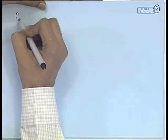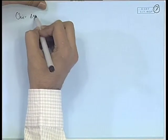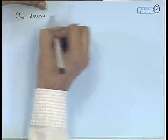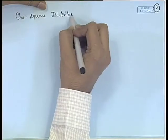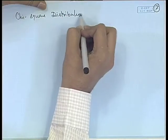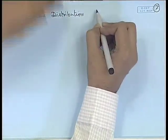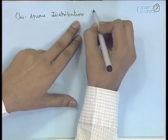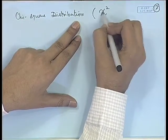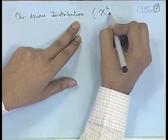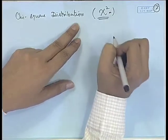Now we discuss another sampling distribution, which is known as chi-square distribution. It is denoted using the Greek letter chi, so chi-square distribution.